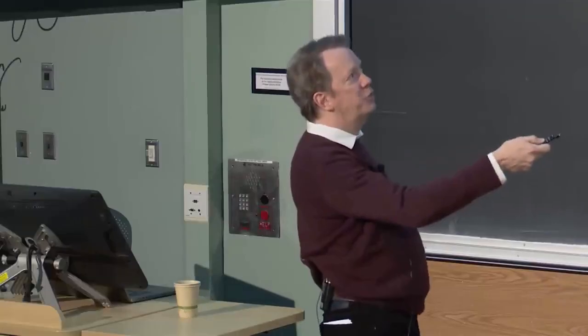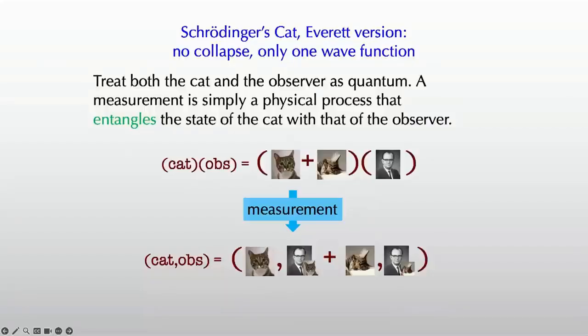So the combined cat plus observer system evolves into an entangled superposition. Part of which says the cat's awake and the observer saw it awake. Part of it says the cat's asleep and the observer saw it asleep. But they're both there.